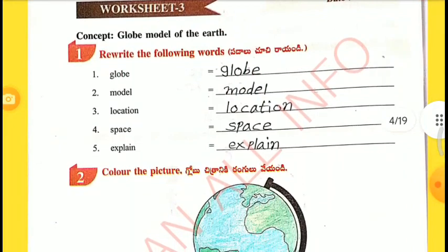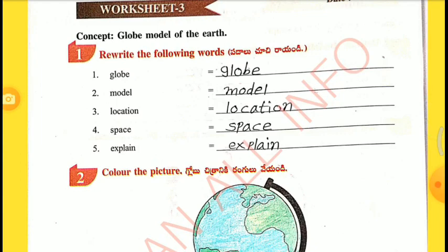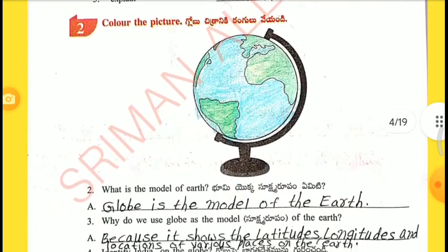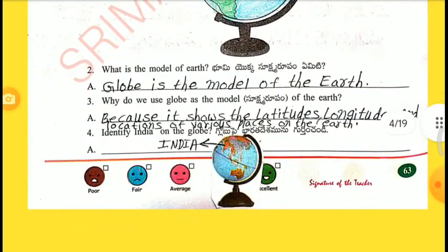Worksheet 3. Concept: Globe — model of the earth. Relate the following words: Globe, Model, Location, Space, Explain. Color the picture. Second: What is the model of earth? Globe is the model of the earth. Third: Why do we use globe as the model of the earth? Because it shows the latitudes, longitudes, and location of various places on the earth. Fourth: Identify India on the globe — India.